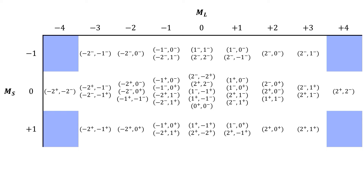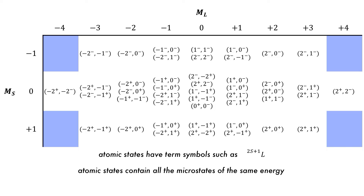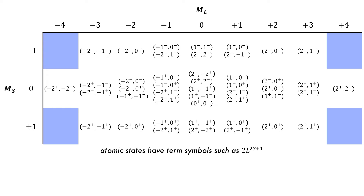Now that we have the 45 microstates, it's a process of generating the atomic states. We need to filter them into atomic states, and the atomic term symbol is defined by ML and MS. The term symbol is defined by capital S and capital L. Capital L is the total orbital angular momentum of the atomic state and is given by ML for that collection of microstates.